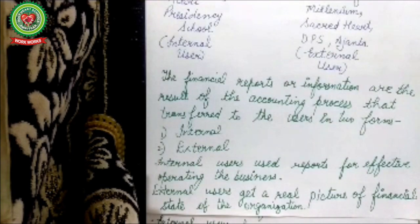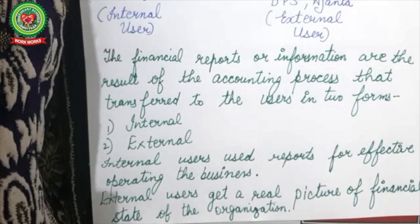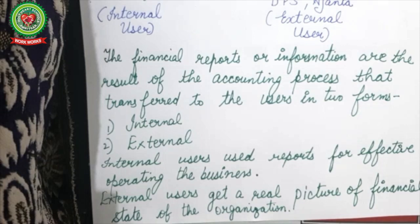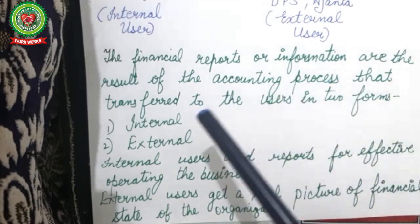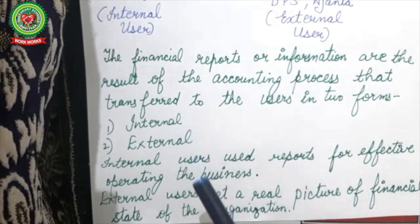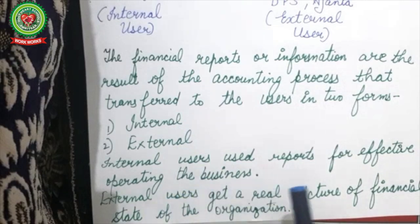As we discussed the process of accounting yesterday, first we collect data, then it is assessed through various stages of accounting, and accounting reports are prepared. These reports are the result of the accounting process and are transferred to users in two forms: internal and external. Internal users utilize them for effective operations.